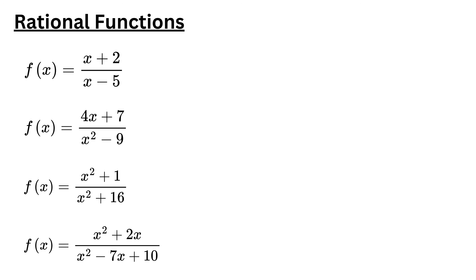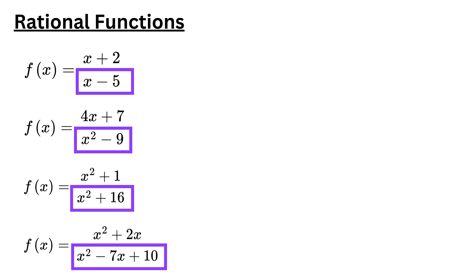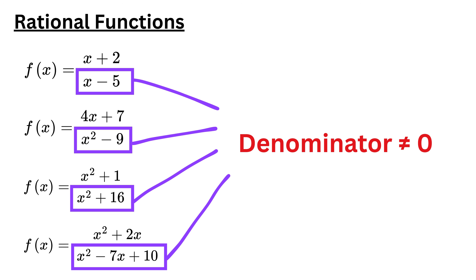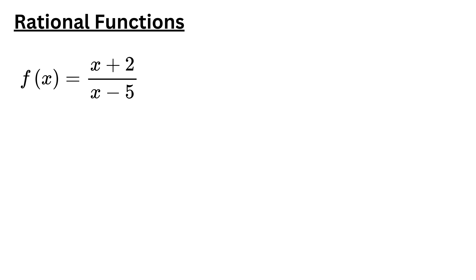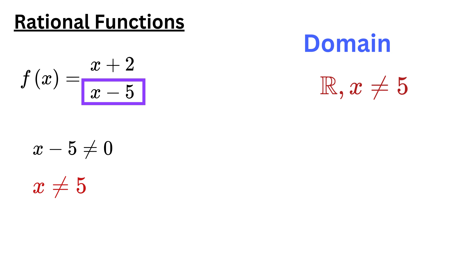Rational functions are different from polynomial functions, because they contain variables in the denominator. For these functions to be defined, the denominator must not be zero. To find the domain, we look at the denominator, set it not equal to zero, and solve for x. Any value of x that makes the denominator zero must be excluded. For this function to be defined, set the denominator x minus 5 not equal to zero. Therefore, we get x not equals 5. So all real numbers are allowed, except 5.